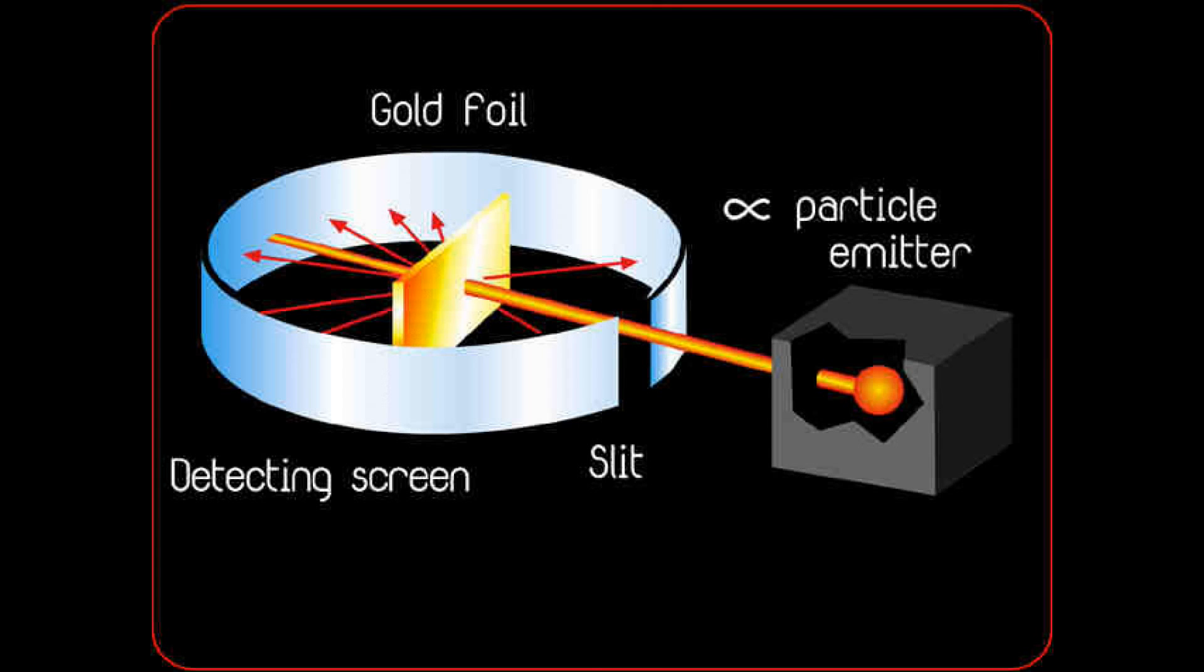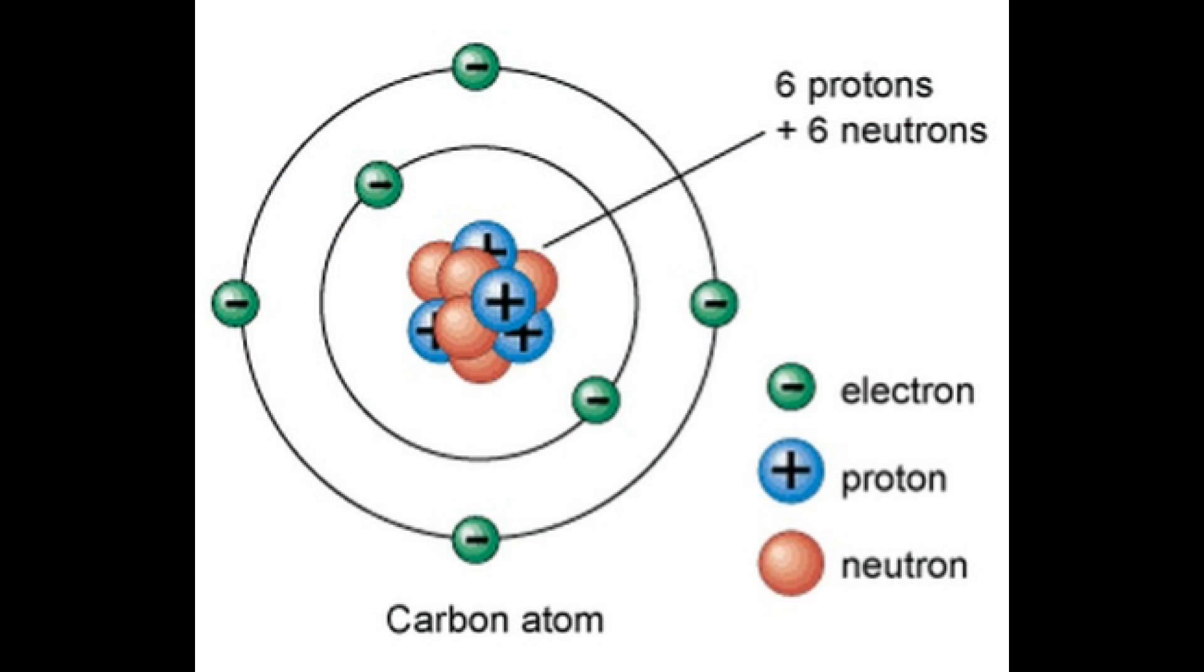Later, in the 1910s, Ernest Rutherford used the gold foil experiment to discover protons which have positive charges. He found out why electrons orbit around the nucleus, and that is because of the positively charged protons located in the nucleus.